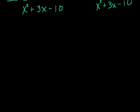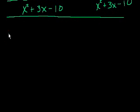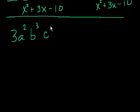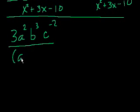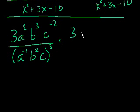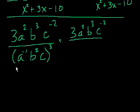Next problem. I'm almost out of space. I'll draw a line here just so you don't get distracted. What is a simplified form of? And they write 3a squared b to the third c to the minus 2, all of that over a to the minus 1 b squared c. And all of that is to the third power. So let's get in simplification mode.